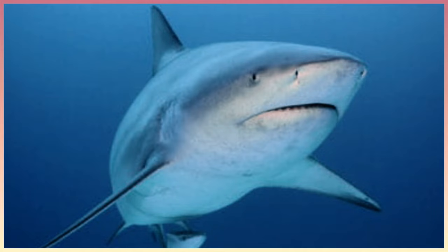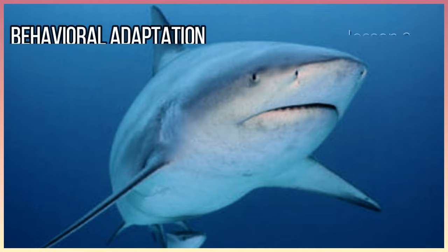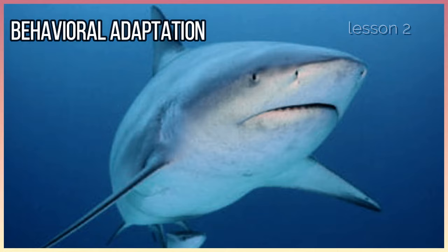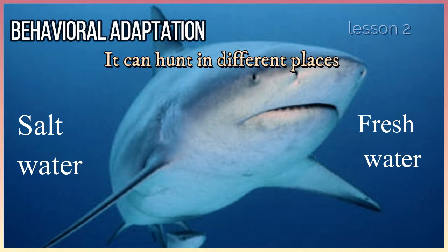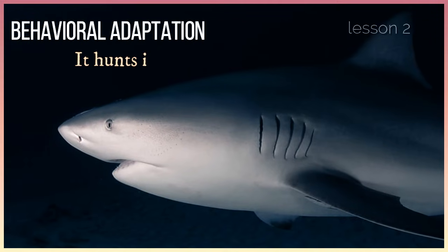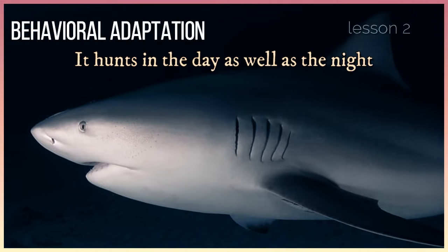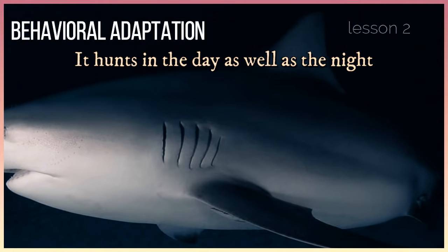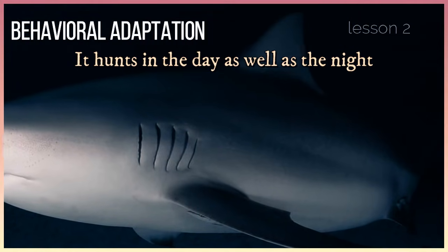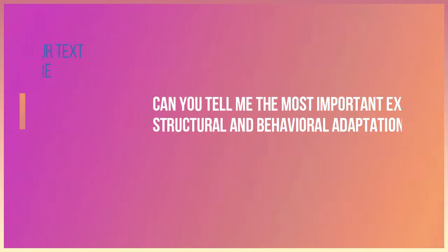Bull sharks also have behaviors that help them survive, known as behavioral adaptations. They can hunt in different places like salt water or fresh water, so they can feed on different types of food. They hunt in the day as well as the night, so their prey cannot predict when this shark will hunt next.